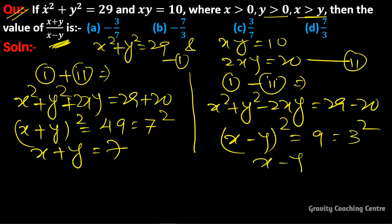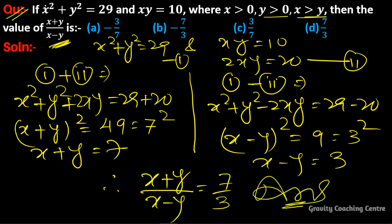Therefore, (x + y)/(x - y) is equal to 7/3. So option D is the correct answer.